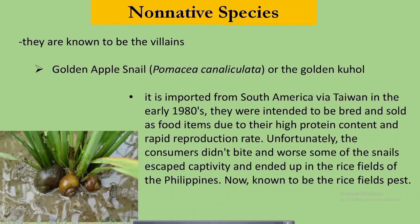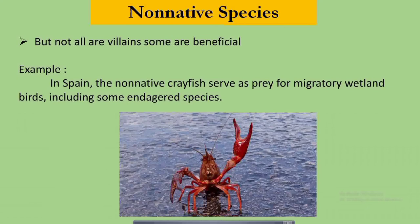Non-native species are known to be villains. Just like what we have here in the Philippines — the golden apple snail, or its scientific name Pomacea canaliculata, or the golden kuhol. It was imported from South America via Taiwan in the early 1980s. They were intended to be bred and sold as food items due to their higher protein content and rapid reproduction rate. Unfortunately, consumers didn't take to them, and some of the snails escaped captivity and ended up in the rice fields of the Philippines, now known as a rice field pest. But not all are villains — some are beneficial. For example, in Spain, the non-native crayfish serves as prey for migratory wetland birds, including some endangered species.